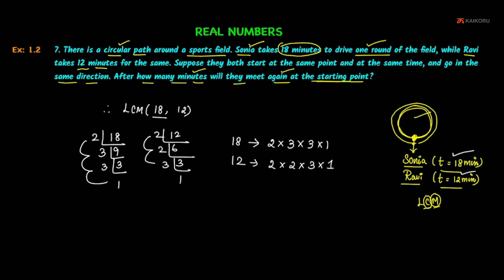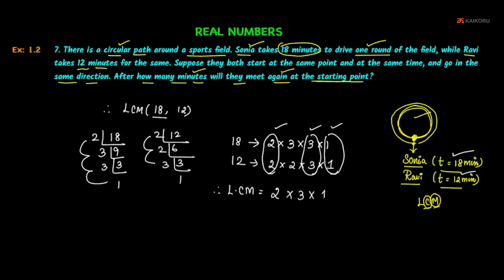So we find out the LCM. The common factors are 2, 3, and 1. Common factors give 2 × 3 × 1. The remaining factors are 3 (from 18) and 2 (from 12), giving 3 × 2. So LCM = 6 × 6 = 36. Therefore, LCM is 36.